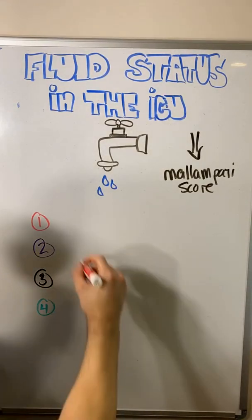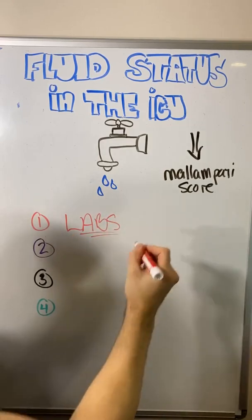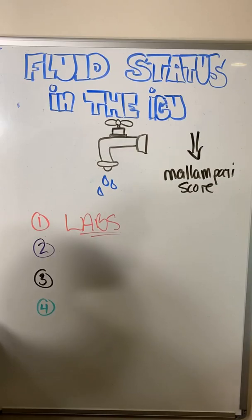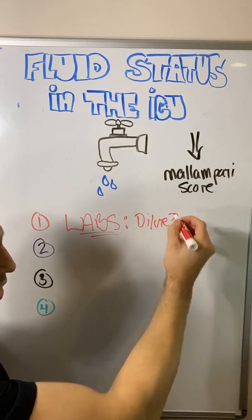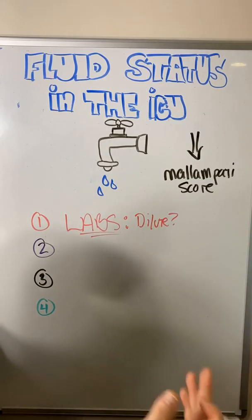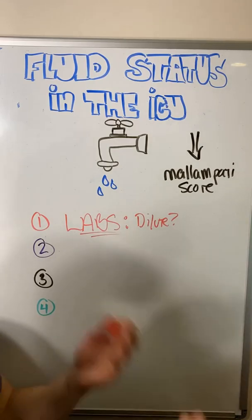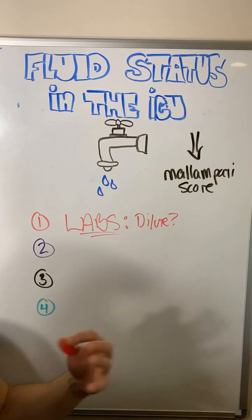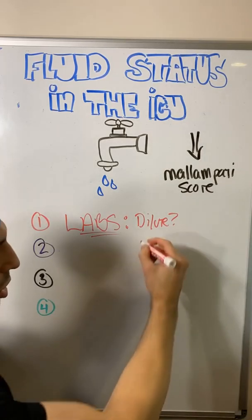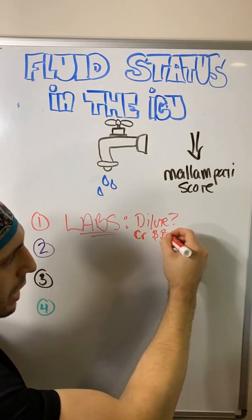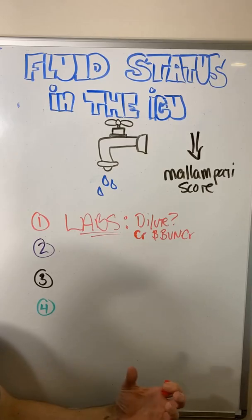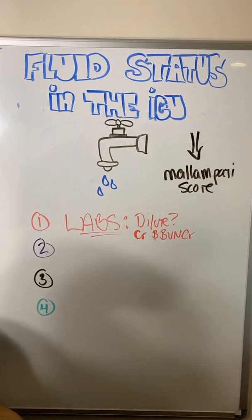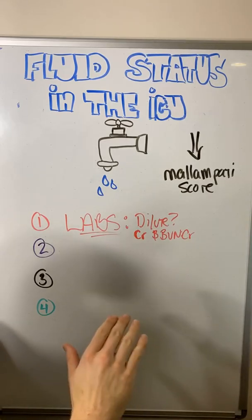The first thing to look at is labs. There is no one lab that will tell us our patient is dry. We're going to look at whether we appear dilute — is hemoglobin up, platelets up, white count up? Do all cell lines look like they're jumping up, suggesting we've lost volume so blood is more concentrated? We also look at creatinine and BUN-to-creatinine ratio to understand what the kidneys are seeing — does it look pre-renal, intra-renal, or post-renal? That gives a hint about volume status.